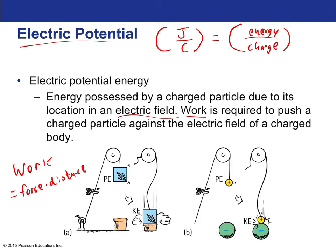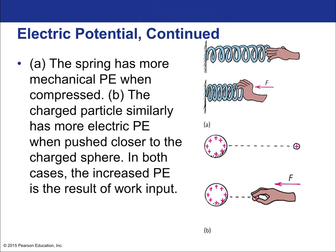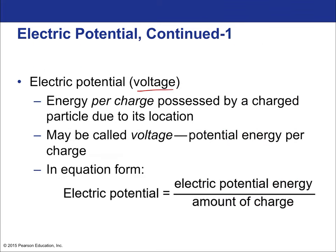Work is required to push a charged particle against the electrical field. Analogously, a spring has more potential energy when compressed; a charged particle similarly has more electrical potential energy when pushed closer to a charged sphere of equal charge. When released, it flies away due to repulsion. Electrical potential—voltage—is electrical energy per charge. The unit is the volt (joules per coulomb). Voltage and electrical potential are synonyms.